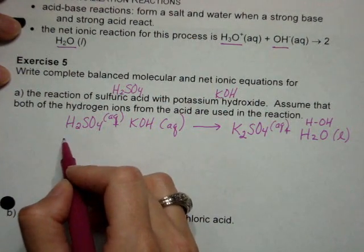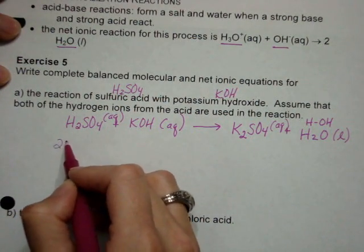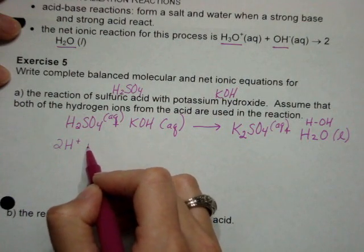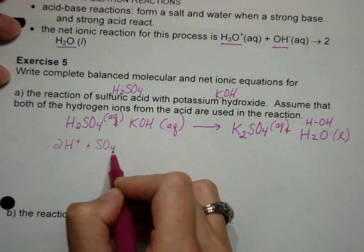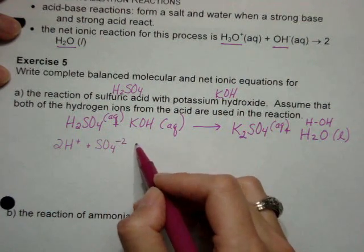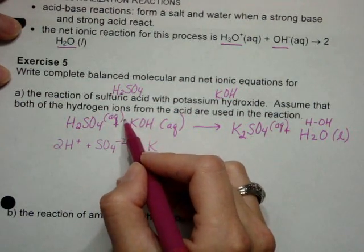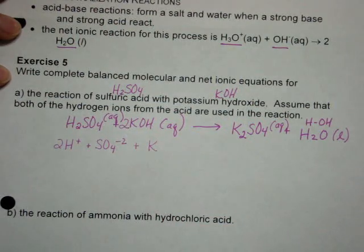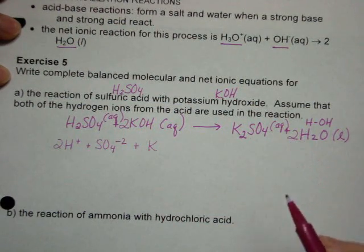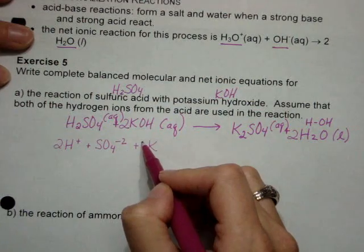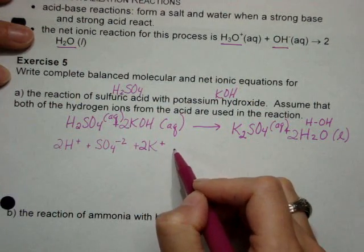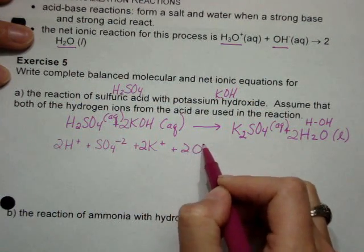So let's split this up. Sulfuric acid has two hydrogen ions and a sulfate ion. Potassium hydroxide, I forgot to balance this. We need a two in front of that KOH and a two in front of that water. So try that again, two potassium ions and two hydroxide ions.